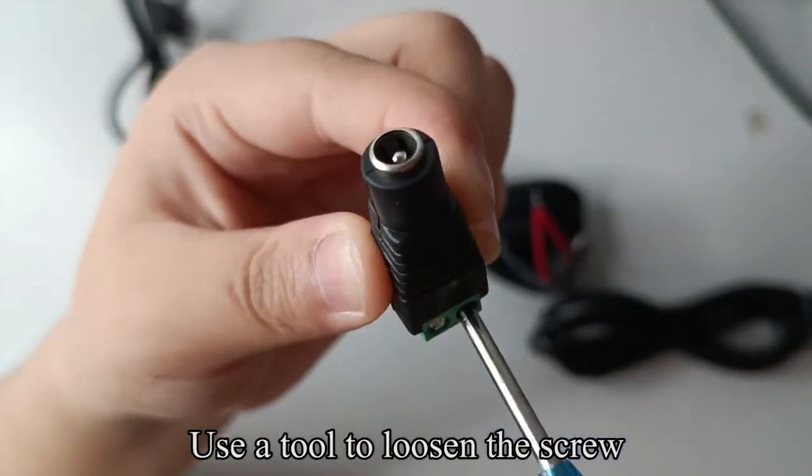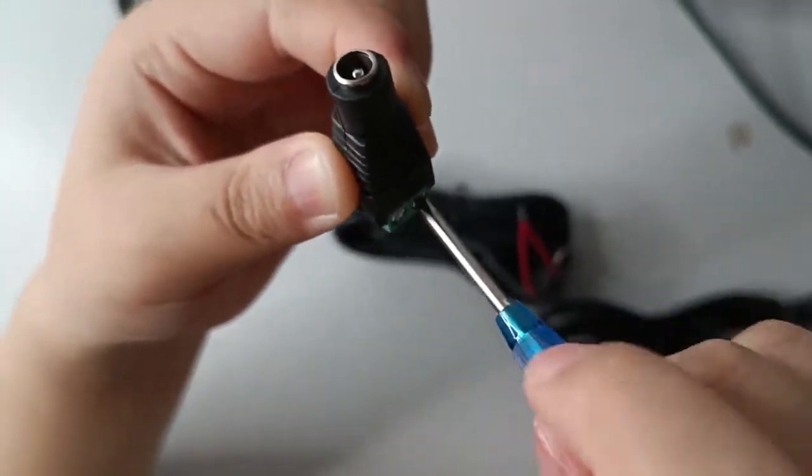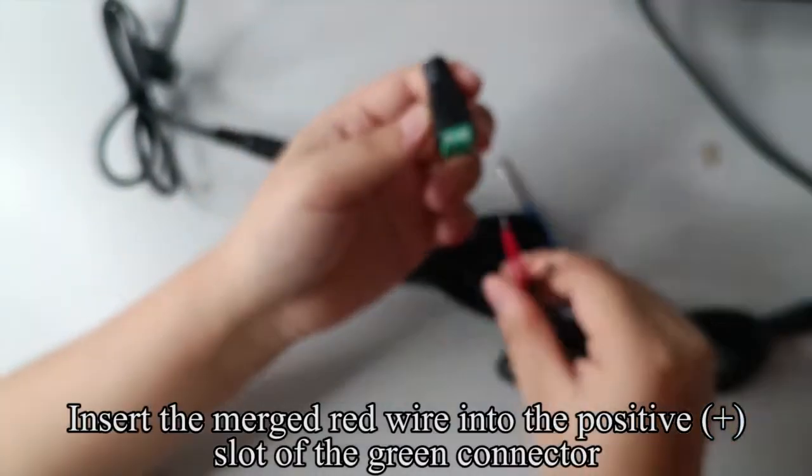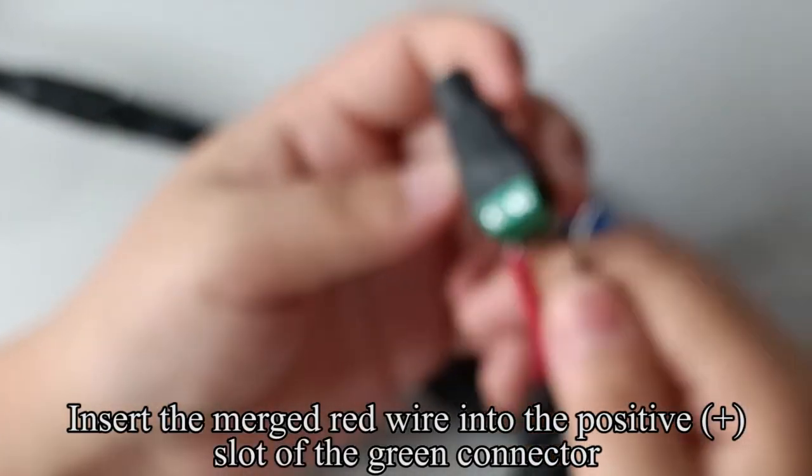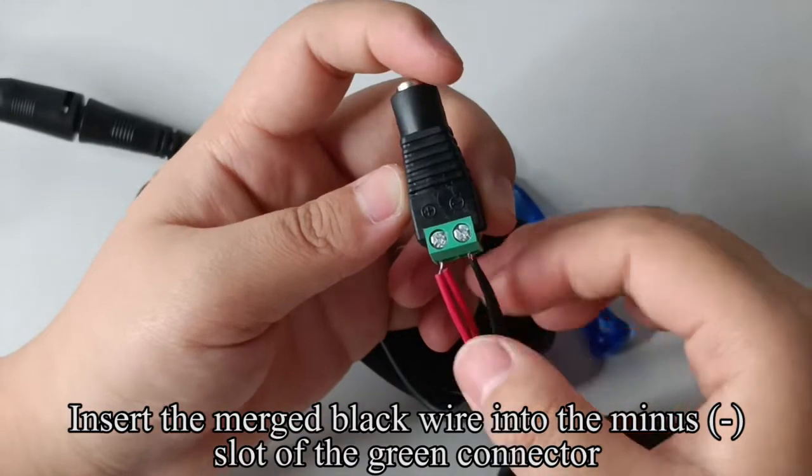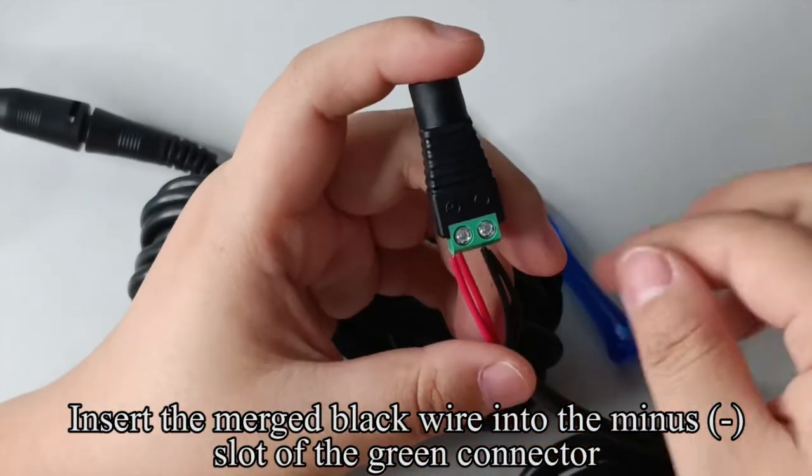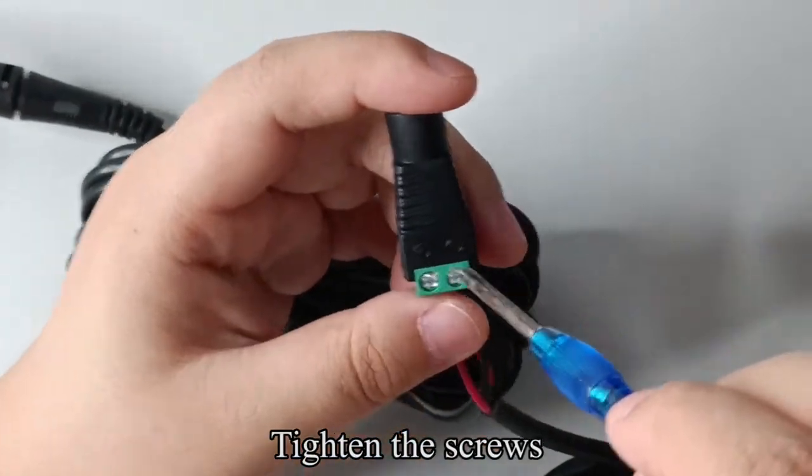Use a tool to loosen the screw. Insert the merged red wire into the positive slot of the green connector. Insert the merged black wire into the minus slot of the green connector. Tighten the screws.